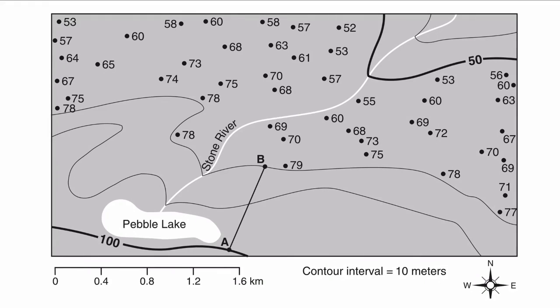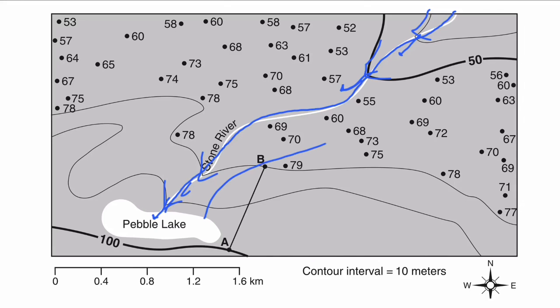One more example: the Stone River. Is it flowing into Pebble Lake or out of Pebble Lake? Here are my V-shaped contour lines — they're pointing upstream. The river is going to flow opposite. In this case, the water is flowing out of Pebble Lake and northeast across the map. We'll practice more in class, but that's all for now. Thanks for watching.